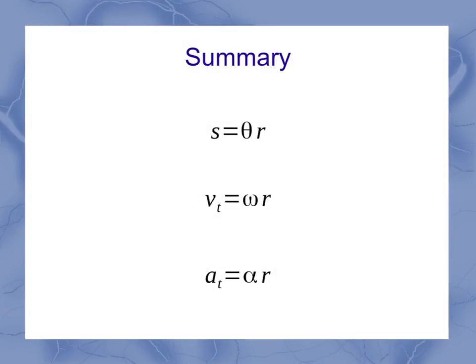In summary, I've got three equations here that are very similar in form, where I've got my translational quantities on my left-hand side, and my angular quantities on the right-hand side. And they all have a r radius next to them.